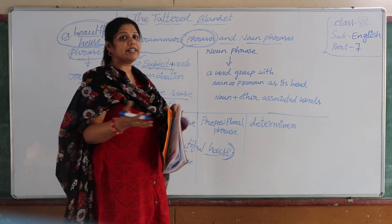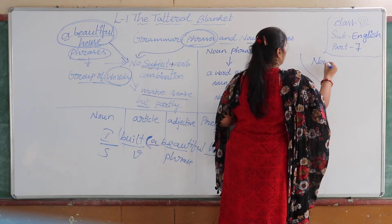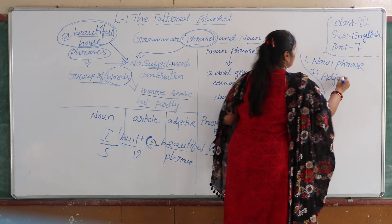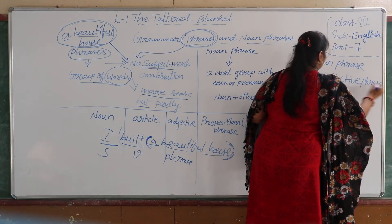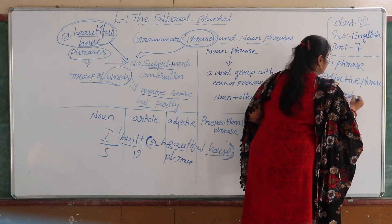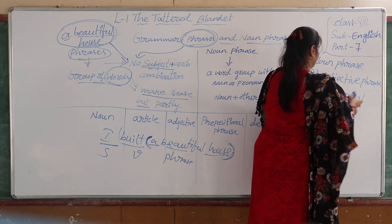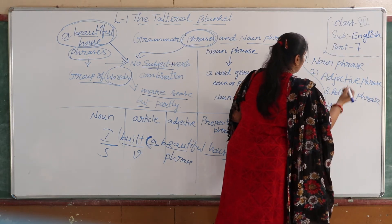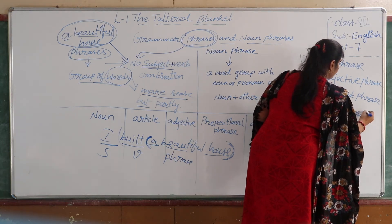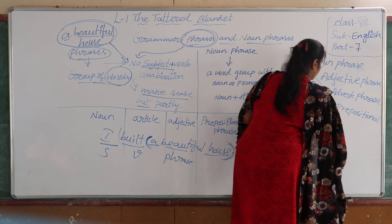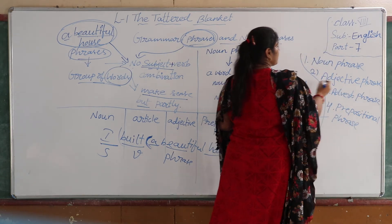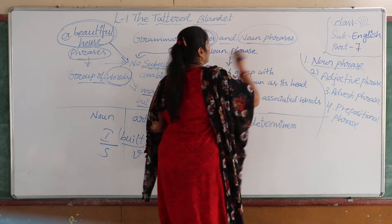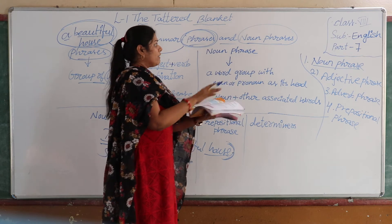So, how many types of phrases are there? There are five types of phrases. The first one is your noun phrase. The second is adjective phrase. The third one will be adverbial phrase. The fourth one is prepositional phrase. So: noun phrase, adjective phrase, adverb phrase, prepositional phrase. What we have in our grammar part today is the noun phrase.